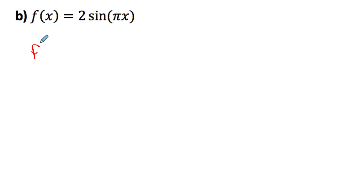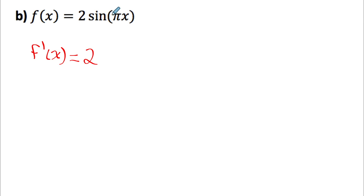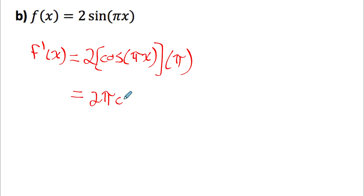Part B: differentiating 2 times sine of pi x. By the constant multiple rule, this is 2 times the derivative of sine of pi x. Differentiating sine gives cosine of pi x, leaving the argument as is, then multiplying by the derivative of the inside, pi. Combining the constants gives the answer: 2 pi cosine of pi x.